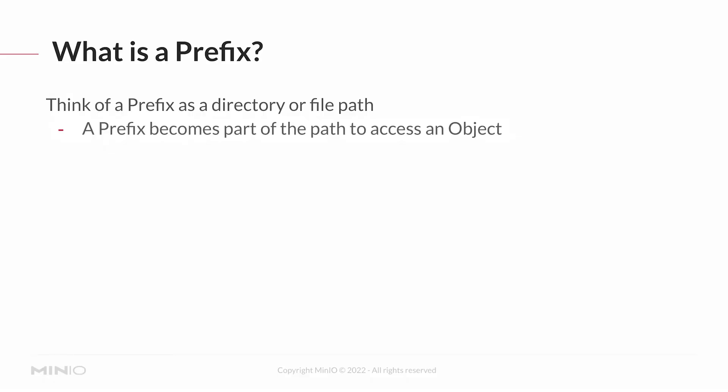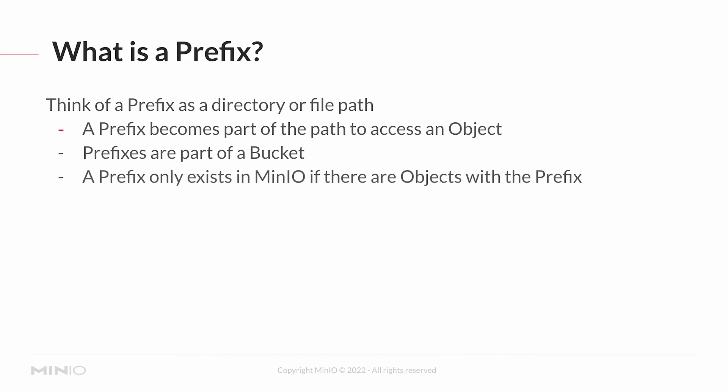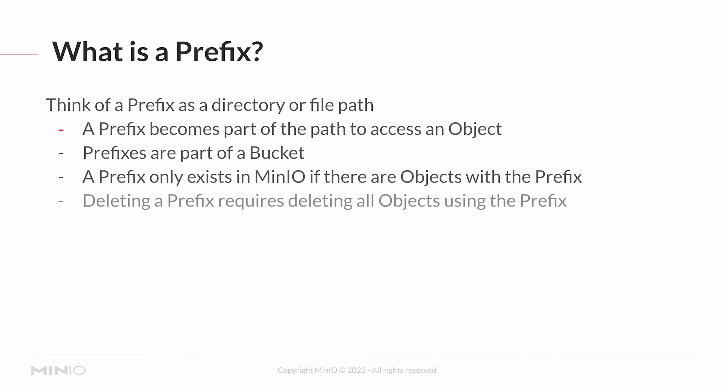The prefix becomes part of the path to access an object, which means that anywhere where you have an object name, you can actually use a prefix as well. The prefix itself is part of a bucket, and importantly, a prefix only exists in MinIO if there are objects that use the prefix. So if I want to create a prefix, I simply need to put an object under that prefix. Similarly, if I have objects in a prefix and I remove all of those objects, then the prefix will be deleted as well.